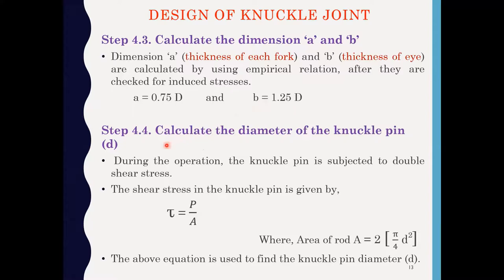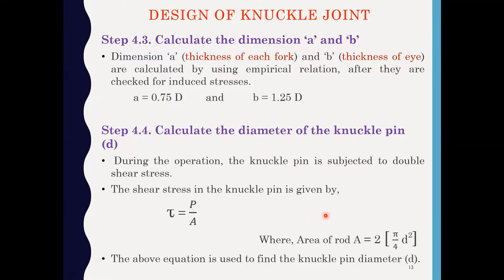Step 4.4: calculate the diameter of the knuckle pin. The knuckle pin is subjected to double shear. The shear stress induced in the knuckle pin is P/A, where A = 2 × (π/4) × D², with D being the diameter of the knuckle pin. The factor of 2 is multiplied because there is double shear — the knuckle pin fails in 3 parts. Using this formula we can find the diameter of the knuckle pin.